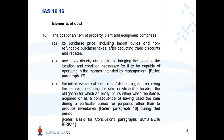But what is included in this cost? Paragraph 16 gives us the elements of cost. First, the cost of an item of property, plant and equipment comprises the purchase price, including import duties and non-refundable purchase taxes such as VAT, after deducting trade discounts and rebates.